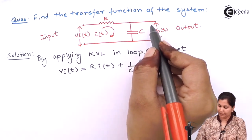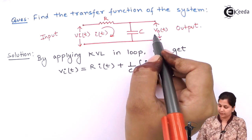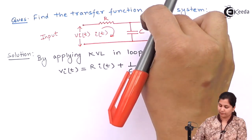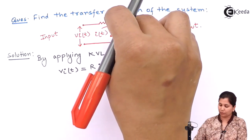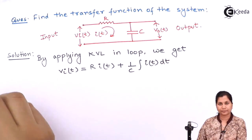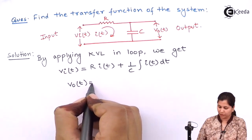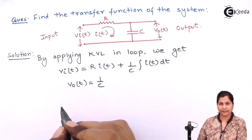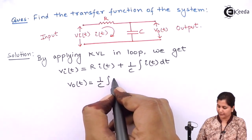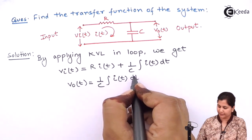Now, if we apply the KVL in this second loop, then this V0T will be equal to the voltage drop across the capacitor. So V0T will be equal to 1 by C integration IT DT.